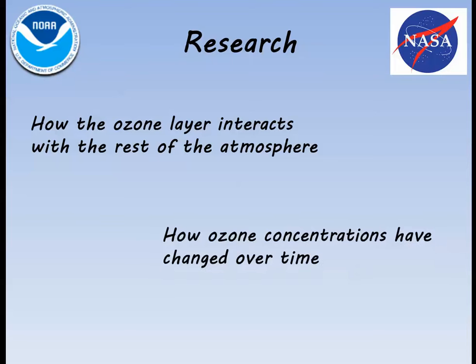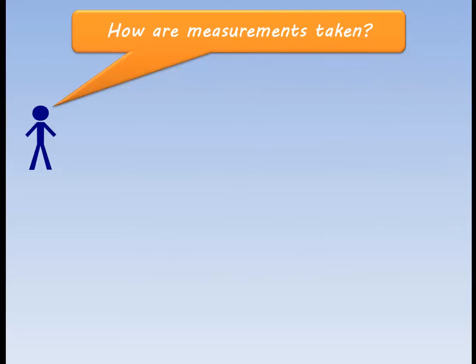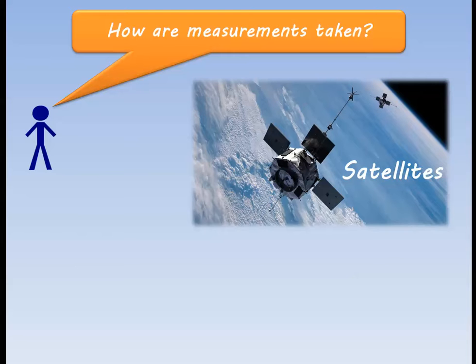So how do we measure ozone? Satellites. With all the satellites in orbit, NASA can map the entire ozone layer around the Earth. However, satellite ozone measurements do fall short when keeping ozone records. Satellites have relatively short life cycles, and each satellite has its own measuring bias, which means each satellite gives different answers.